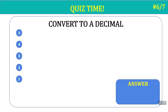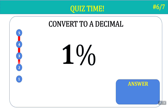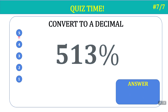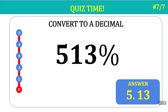Question six: convert to a decimal — 1 percent. Time's up — the answer is 0.01. The answer is not 0.1, but 0.01. 0.1 would be 10 percent. And the last question: convert to a decimal — 513 percent. Time's up — the answer is 5.13.